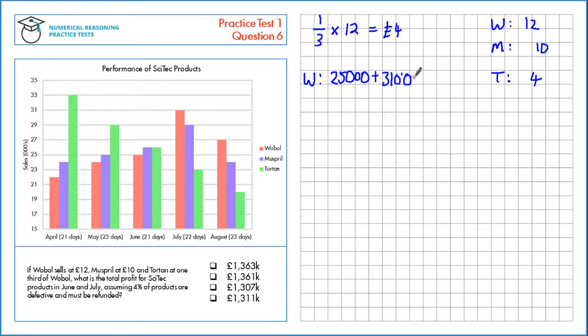Then multiply by the price, which is £12, to give a total of £672,000. We'll do the same now for Muspril and Torton, bearing in mind their specific prices.